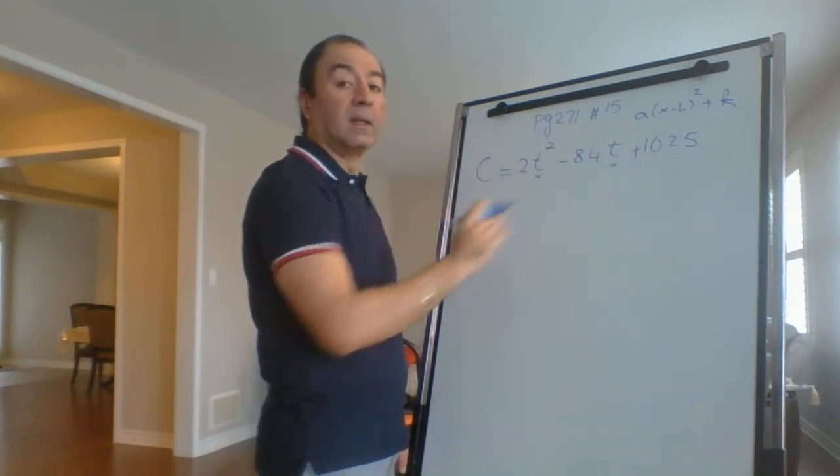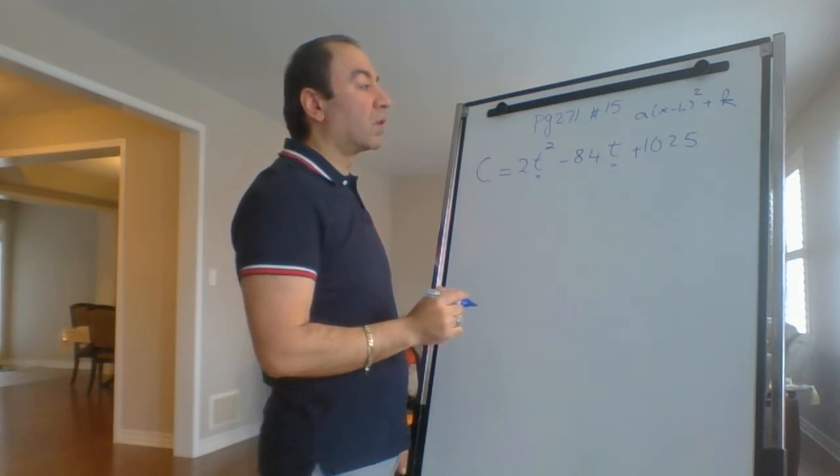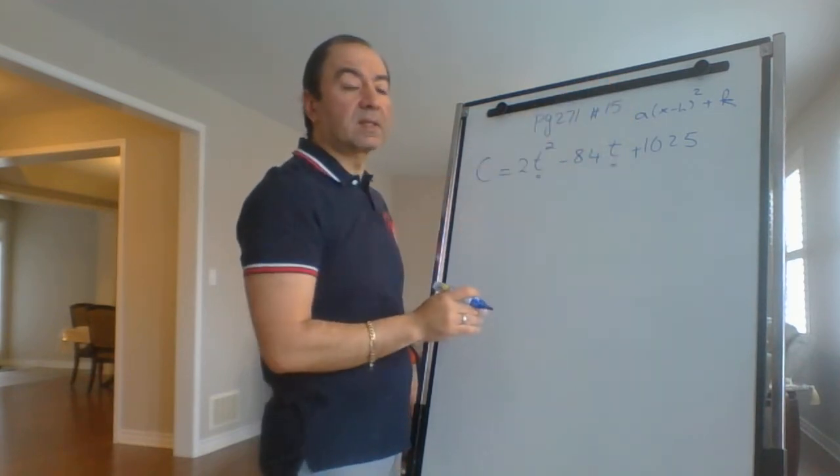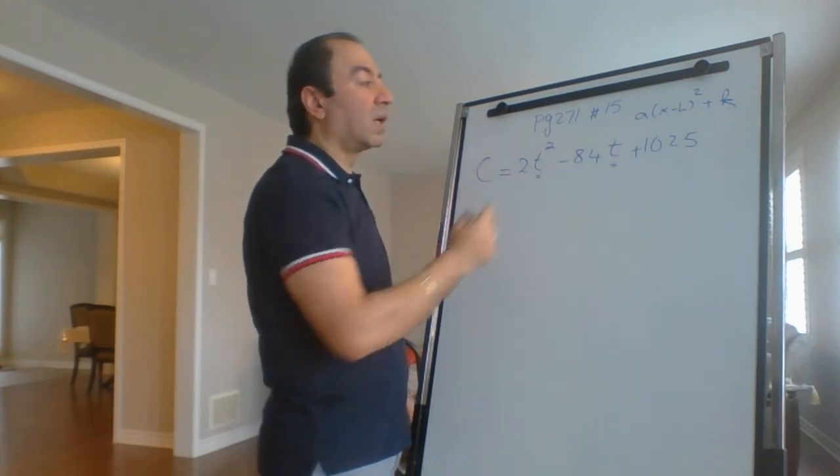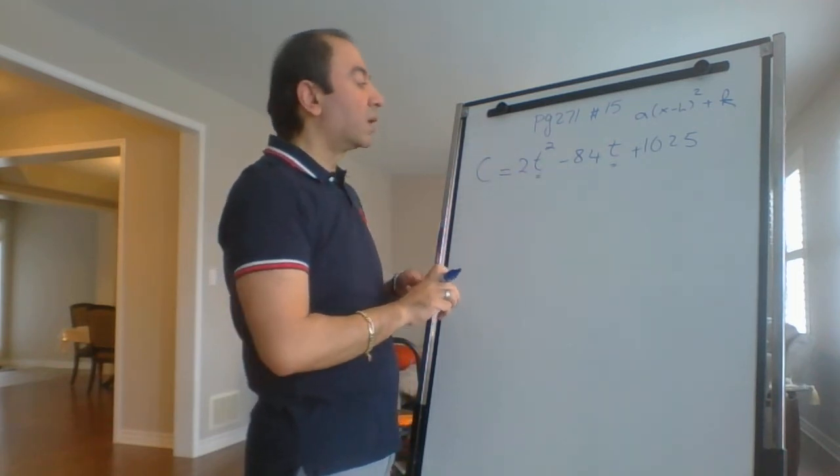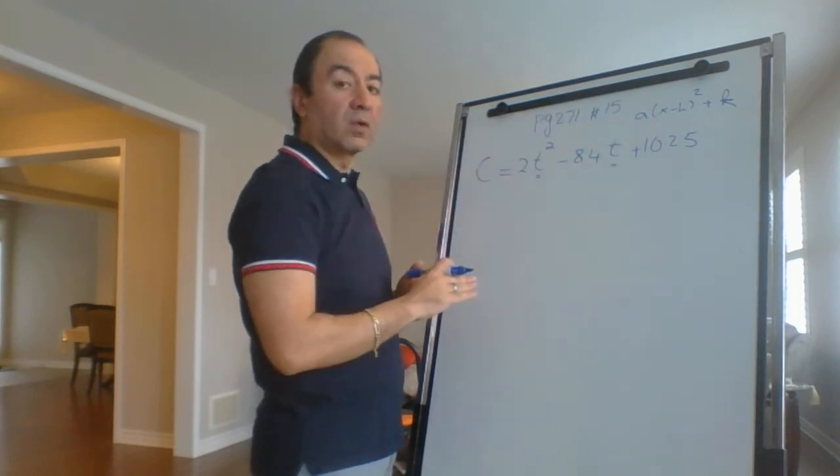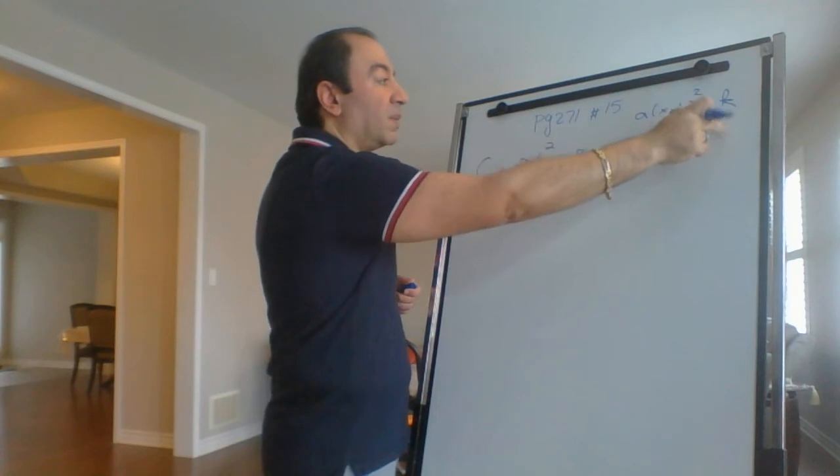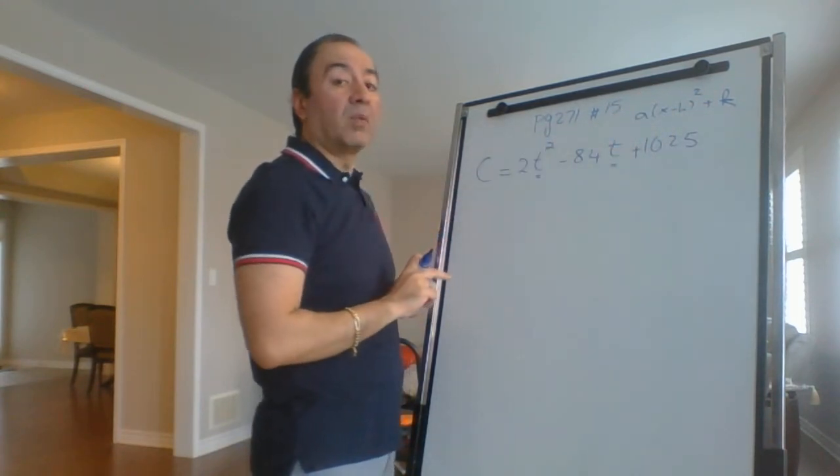Which method do we use to switch from standard to vertex? The method is called completing the square. So we have to apply the method of completing the square to switch from standard form to vertex form.